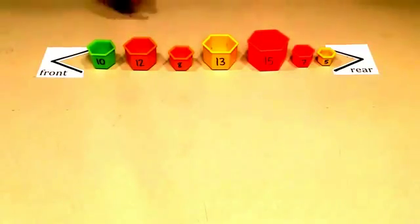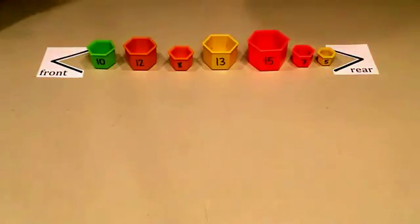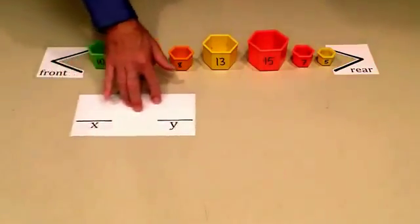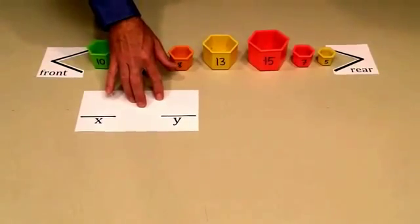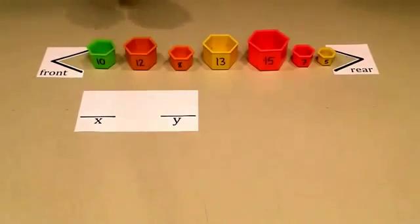Since ExchangeSort is a comparison-based sort between two items, and we can't compare two items while they're inside of the queue, we're going to need a couple of extra objects, X and Y.